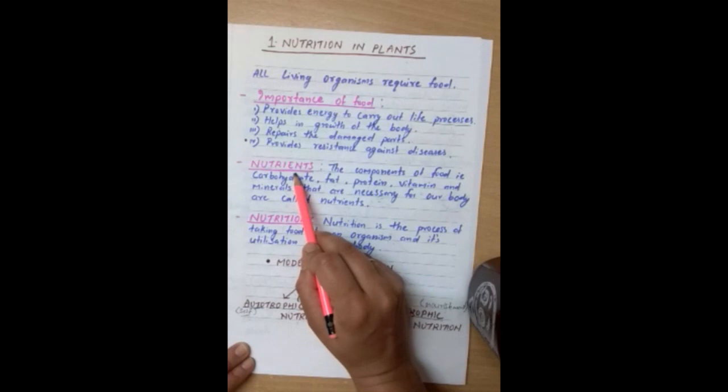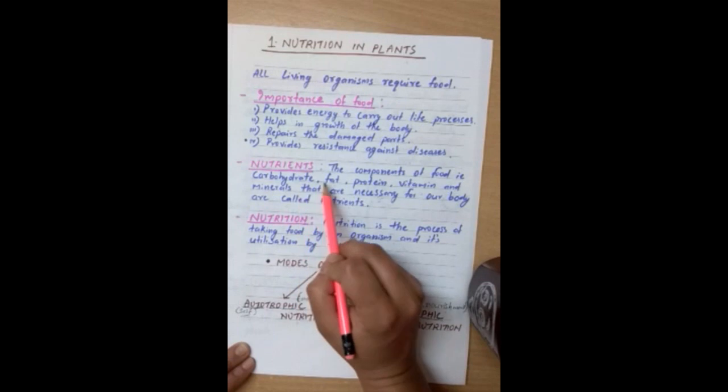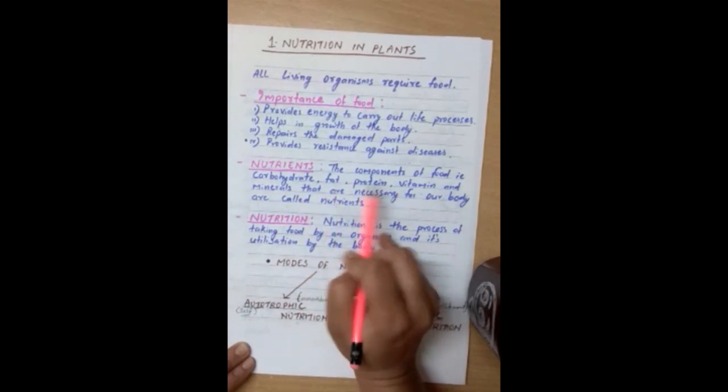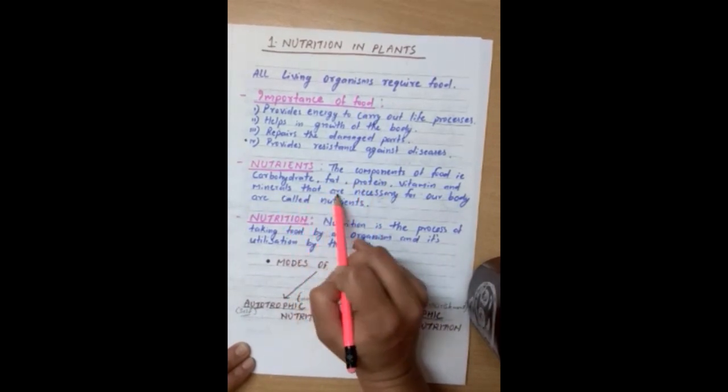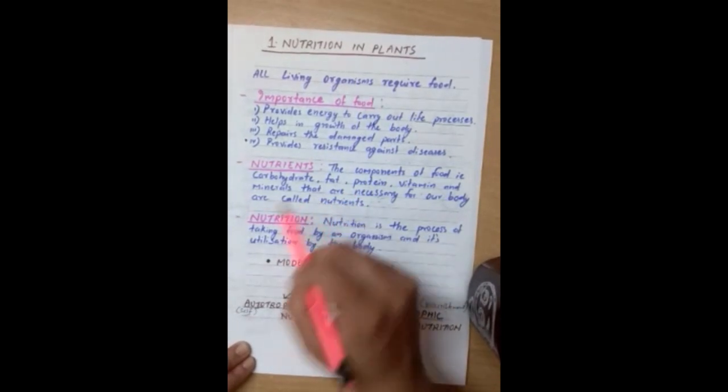So, how can we define nutrient? The components of food that are carbohydrate, fat, protein, vitamin and minerals that are necessary for our body are called as nutrients.